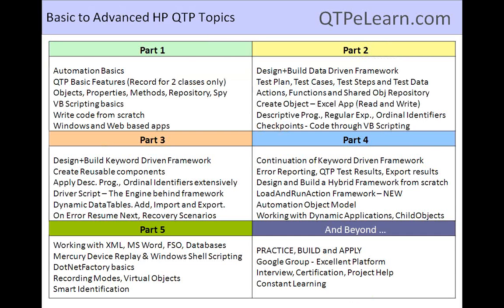Here is the overall flow of topics. We start with the basics, then move to designing and building a data-driven framework, then a keyword-driven framework, then a hybrid framework. Along the way, we cover critical things like descriptive programming, ordinal identifiers, regular expressions, working with databases, Microsoft Word, .NET Factory, and so on.